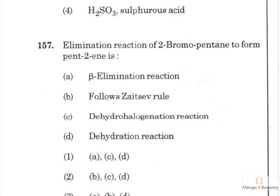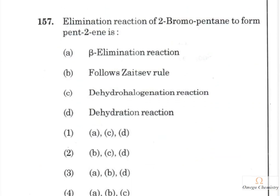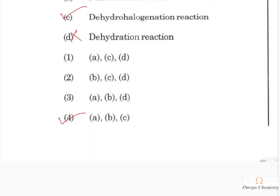Question 157: Elimination reaction of 2-bromopentane to form pentene. In 2-bromopentane, with bromine at C2, removing bromine and a hydrogen from C3 according to Zaitsev's rule gives a double bond between C2 and C3, producing pent-2-ene. It is a beta elimination and a dehydrohalogenation reaction, but not a dehydration reaction. A, B, C is the right answer.